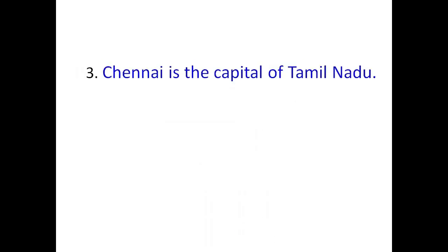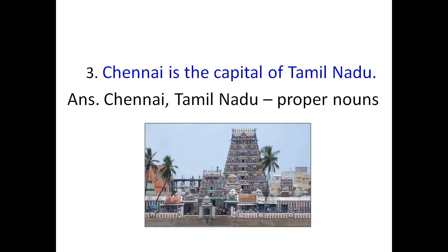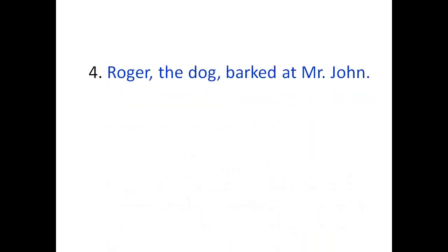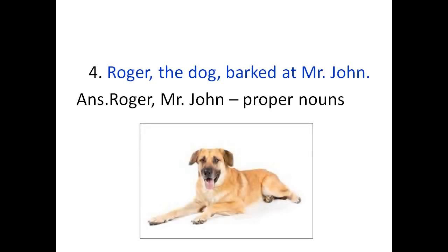'Chennai is the capital of Tamil Nadu.' The Proper Nouns are Chennai and Tamil Nadu, as Chennai is the name of the city and Tamil Nadu is the name of a state. 'Roger the dog barks at Mr. John.' Roger is the name of a dog, whereas Mr. John is the name of a person, so both Roger and Mr. John are Proper Nouns.